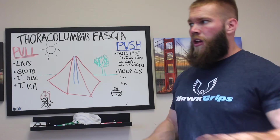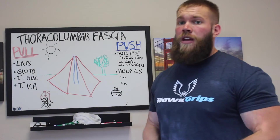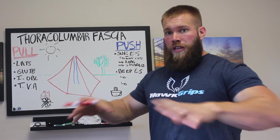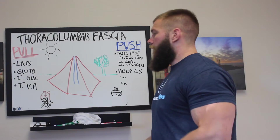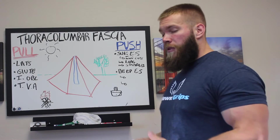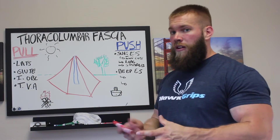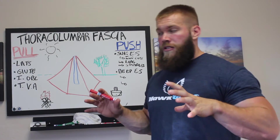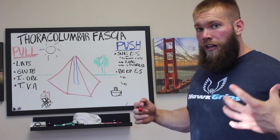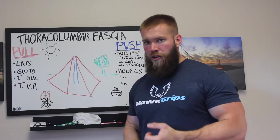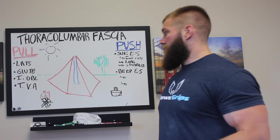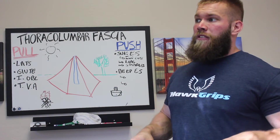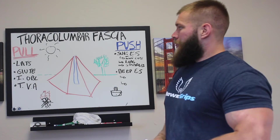Forget all that jargon and think of it just like a tent. A tent has a post up the middle and stakes driven in the ground that keep the tarp on top. The pushing effect of the deep and superficial spinal erectors underneath the thoracolumbar fascia acts as our tent post — applying upward pressure to spread tension across the fascia. Our pulling muscles — the obliques, lats, glutes, and transverse abdominus — are the pegs in the ground that keep the thoracolumbar fascia taut to keep our low back stable.